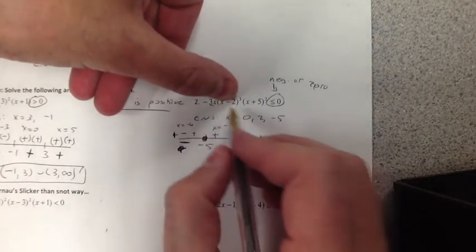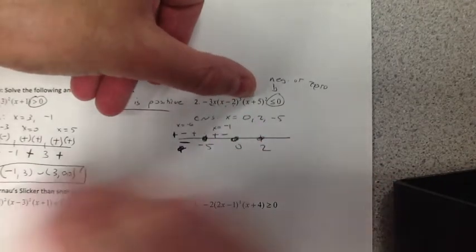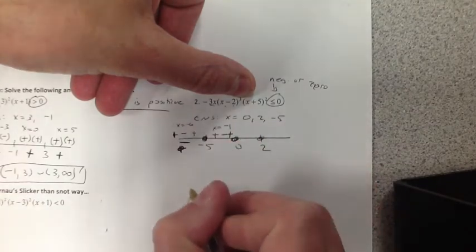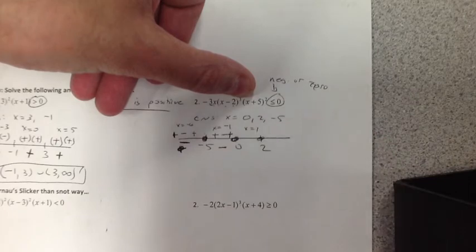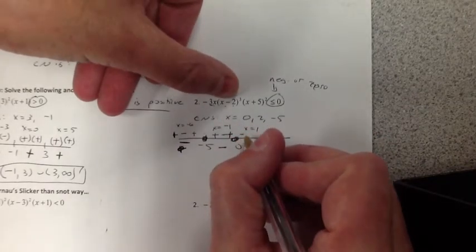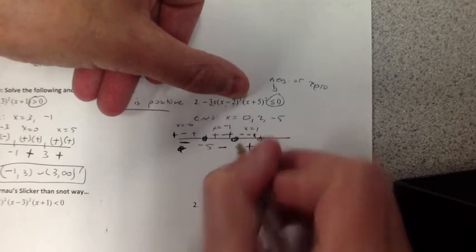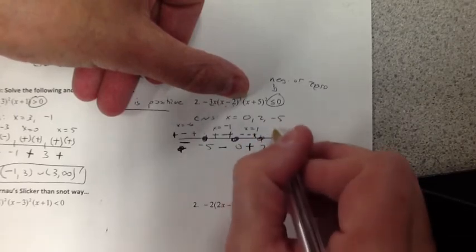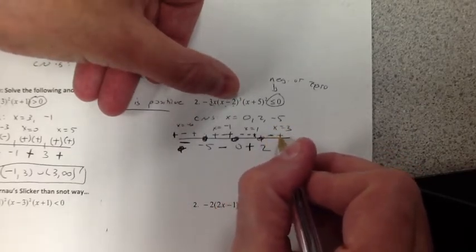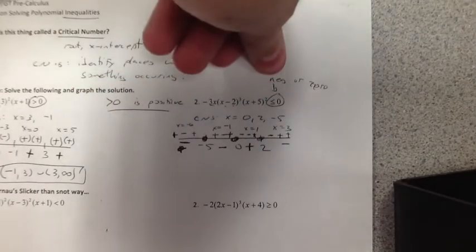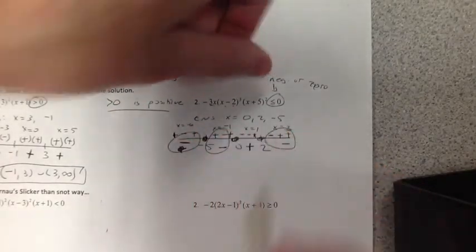All right, so negative 1, this becomes negative still. And this becomes positive. So it stays negative as well. 0 to 2, I might pick x equals 1. Negative, negative, positive. That becomes positive because 2 negatives make a positive. And if I pick something after 2, like 3, we get negative, positive, positive, which is negative. And now where is it negative or 0? I look at these different areas.